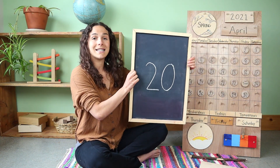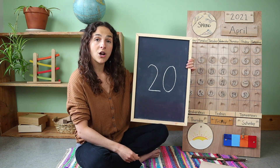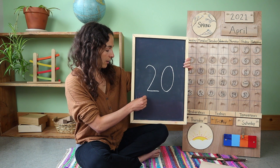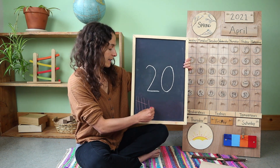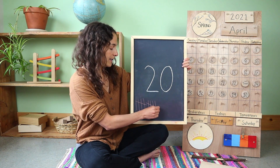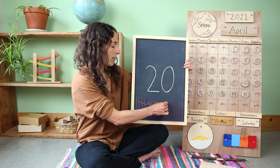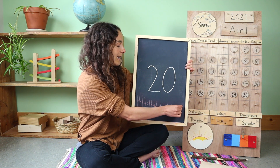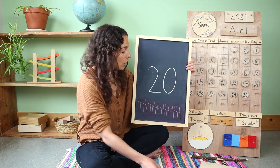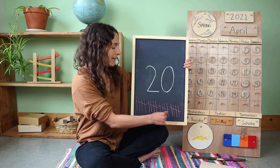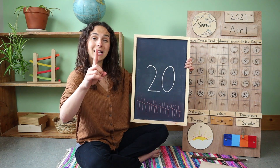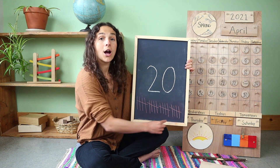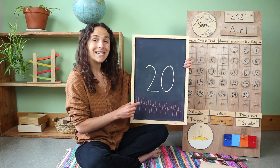Let's count 20 tally marks together. I'm going to draw them on the bottom of the chalkboard and we can count together. Are you ready? One, two, three, four, five goes across, six, seven, eight, nine, ten goes across, eleven, twelve, thirteen, fourteen, fifteen goes across, sixteen, seventeen, eighteen, nineteen, and twenty goes across. Now let's count how many groups of five we see: one, two, three, four. Four groups of five makes 20 tally marks.